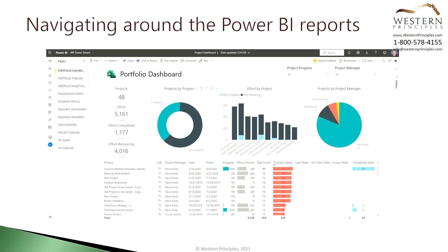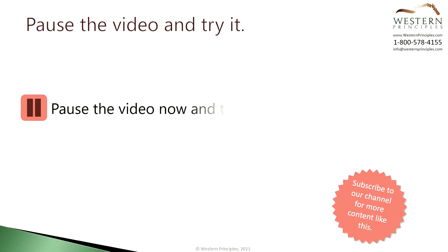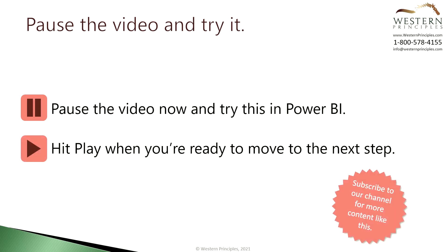You can also usually filter the report by clicking on report items. For example, in this report, if we click on the open projects in the donut report on the left, your report will filter on the open projects. You'll notice that the things that are filtered out go lighter, kind of washed out colors. To turn the filter off, click on the open part of the donut again and the filter is reset. You can also click reset to default to remove filters. You can pause the video here and try that in Power BI now.